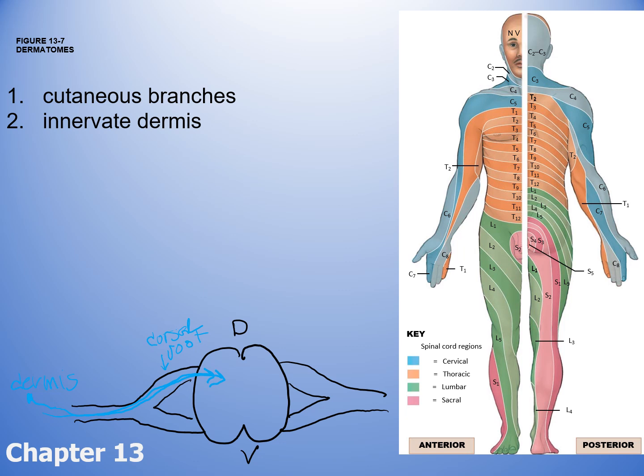The cutaneous branch brings sensory information into the central nervous system. This picture can be somewhat misleading — the left side shows dermatomes on the anterior face of the body, and the right side shows dermatomes on the posterior face. So the sensory neuron that innervates the dermis is called the cutaneous branch, and the specific area of skin it innervates is called the dermatome. Dermatomes are bilateral — there's one on each side.